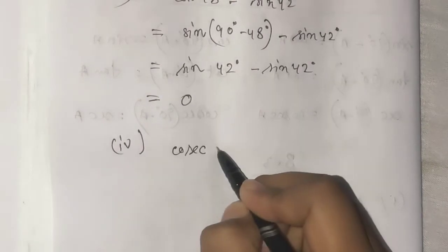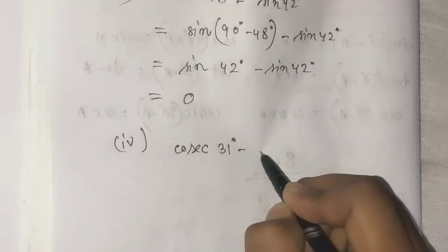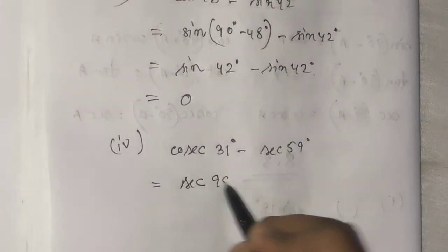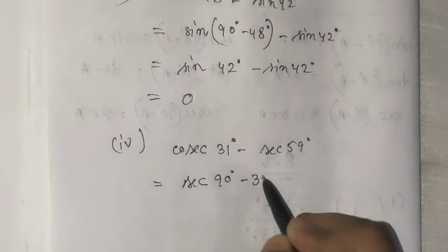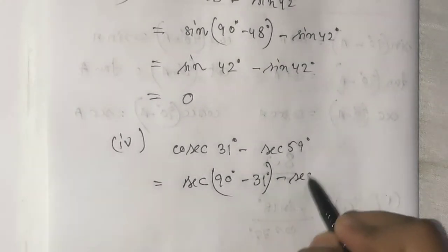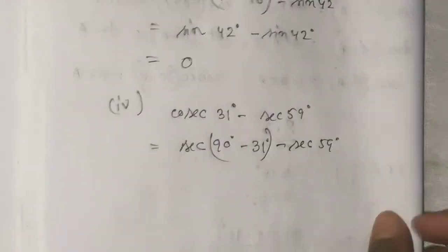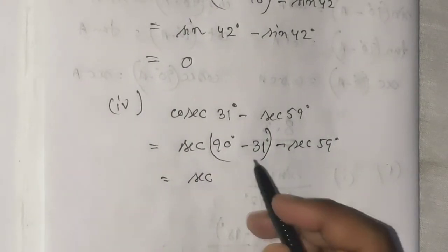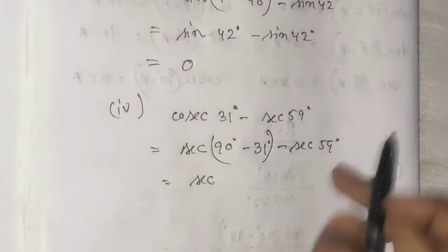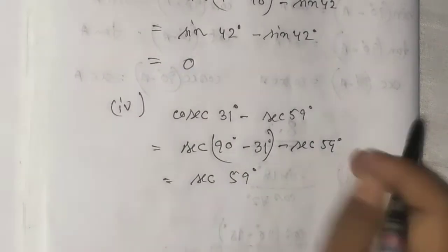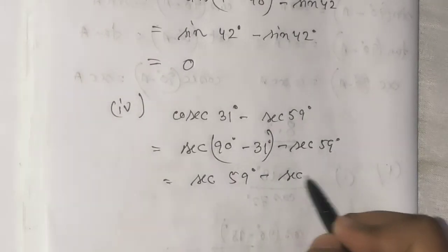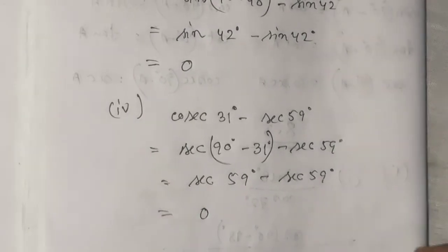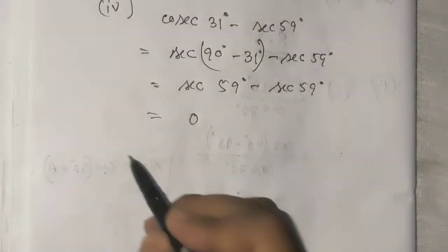Next example: sec31° minus sec59°. We use the identity: sec59° equals sec(90° - 31°), which equals cosec31°. So sec31° minus cosec31°. Wait, going back: 90° minus 31° equals 59°, so the answer comes out to zero.